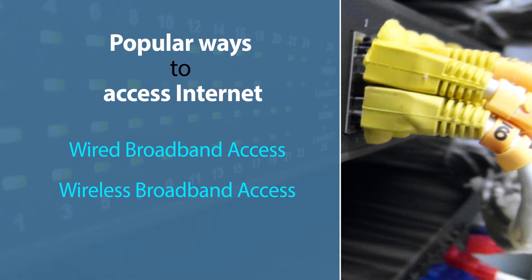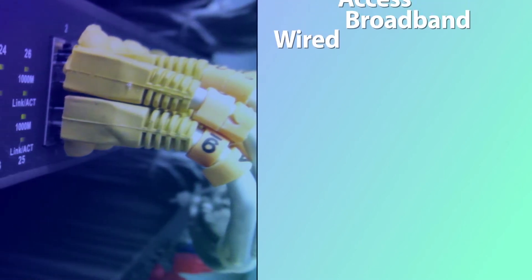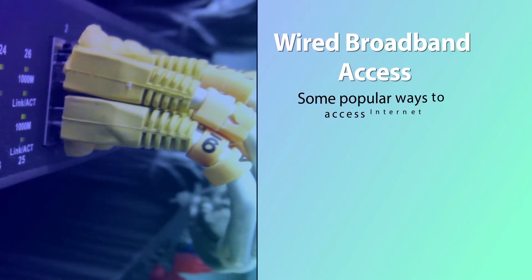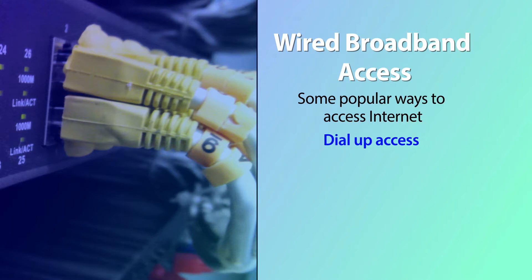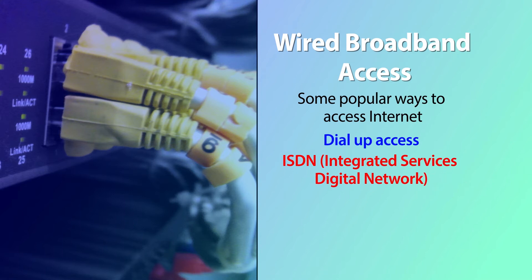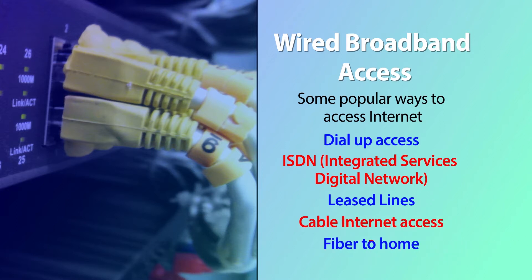These are the two popular ways: wired broadband access and wireless broadband access. For wired broadband, the important types include dial-up access, ISDN (Integrated Services Digital Network), leased lines, cable internet access, and fiber to the home. These are some of the well-known ways of connecting using wired broadband.